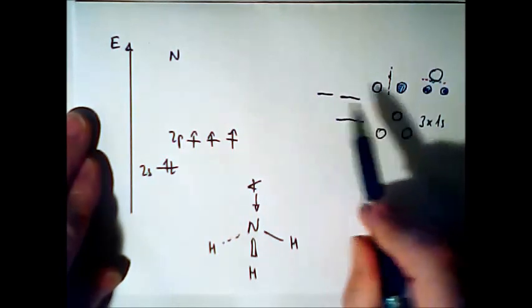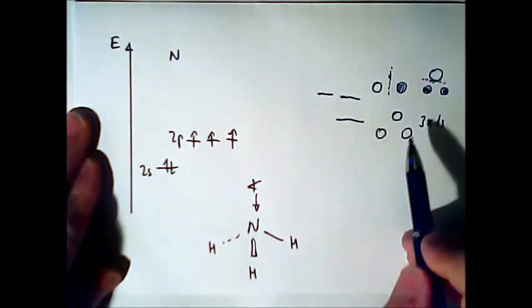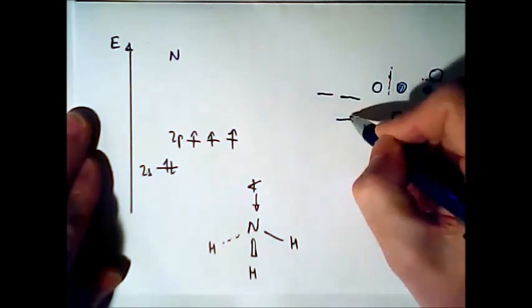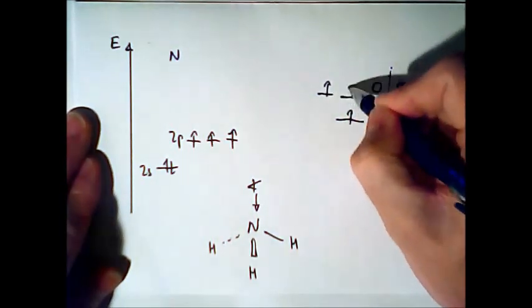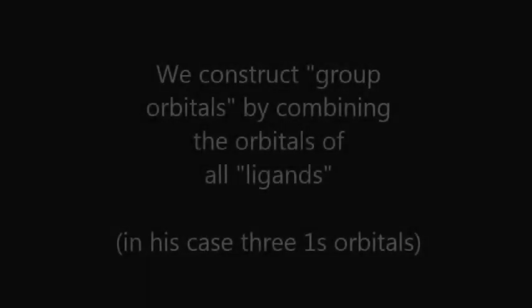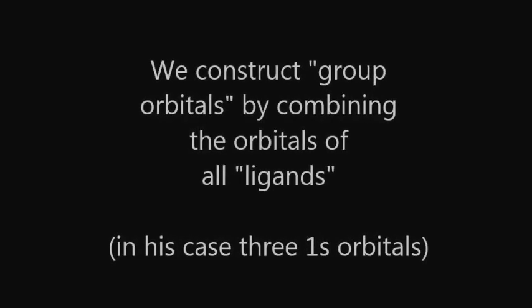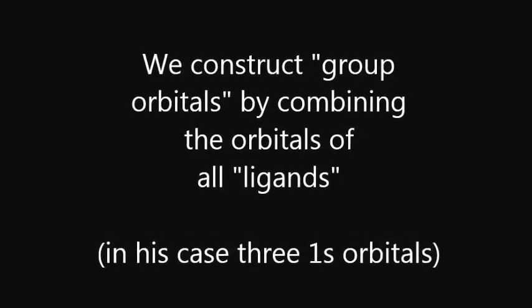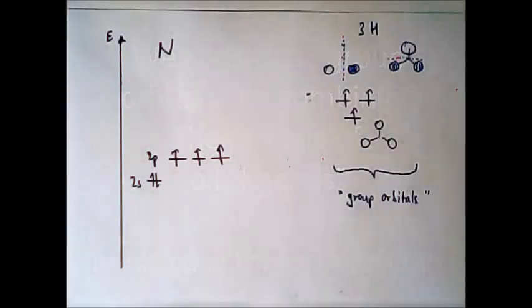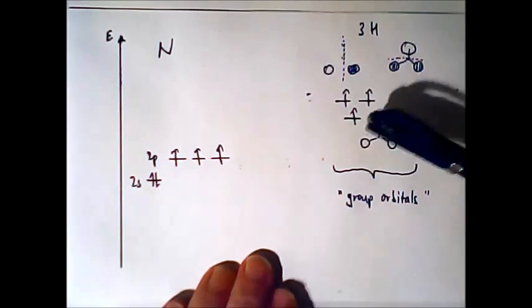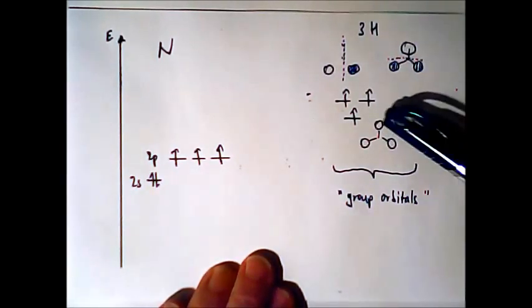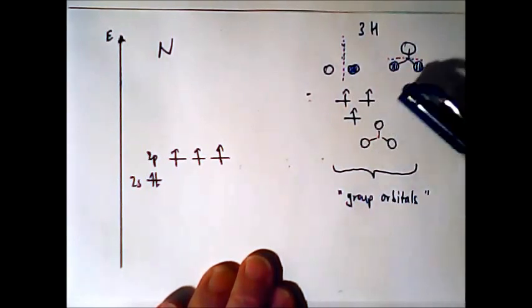So what I get is three orbitals from the three 1s orbitals. And in each orbital is one electron. So I try to draw it a little bit more nicely.